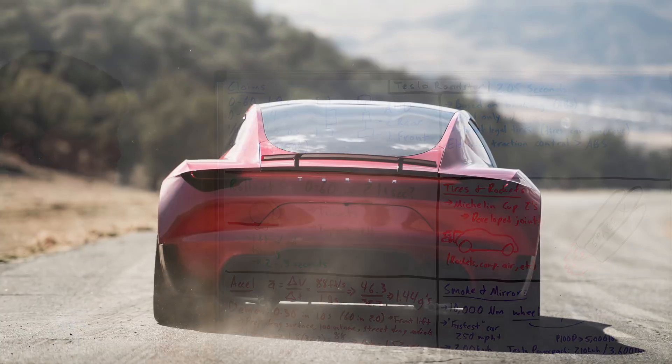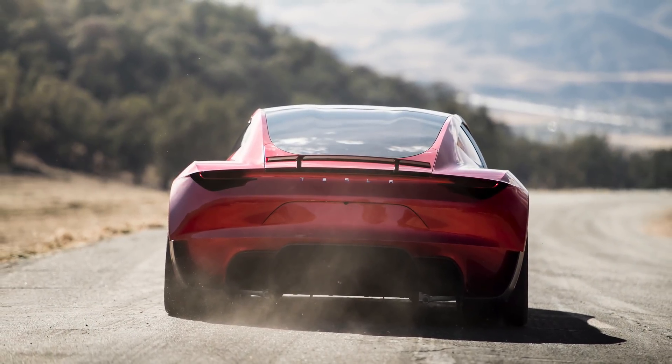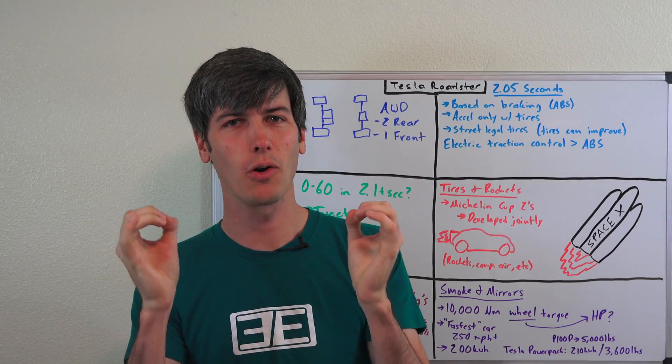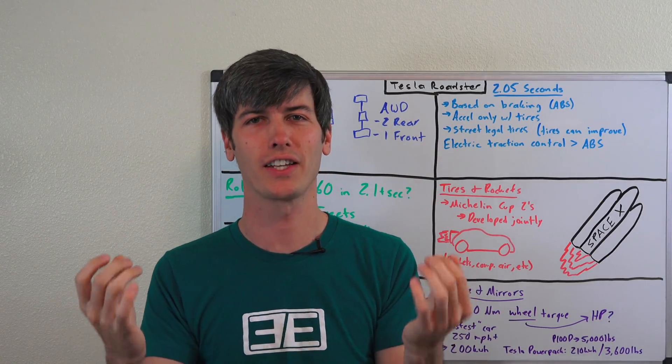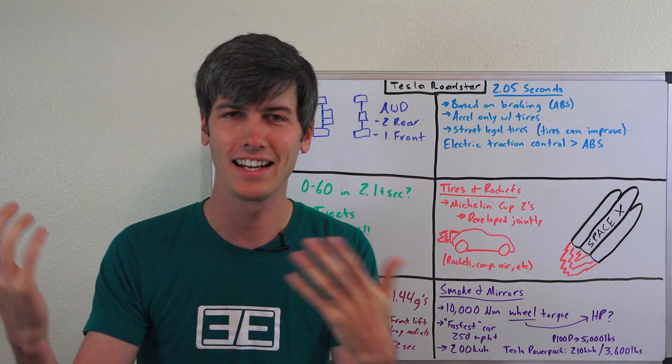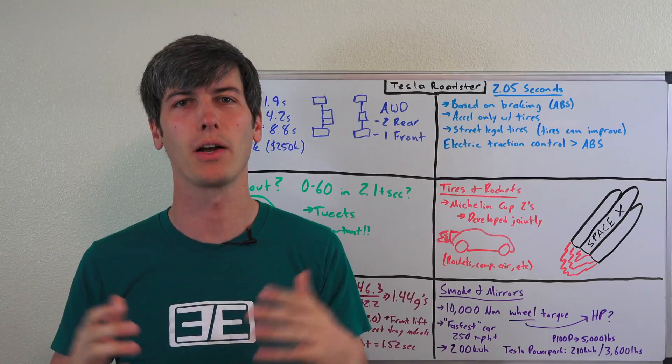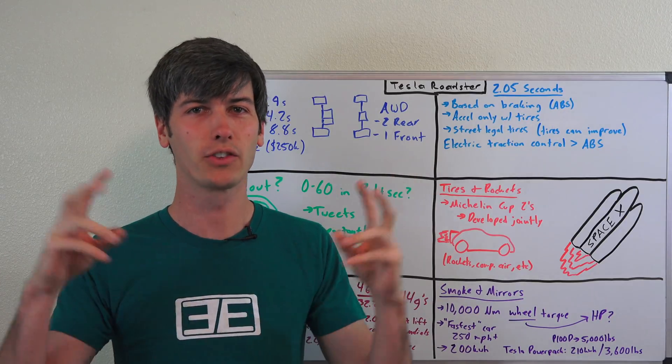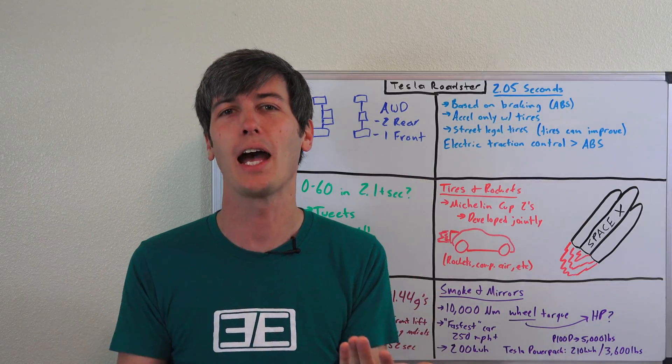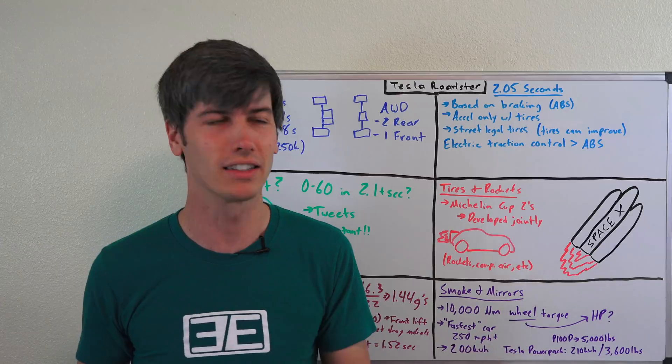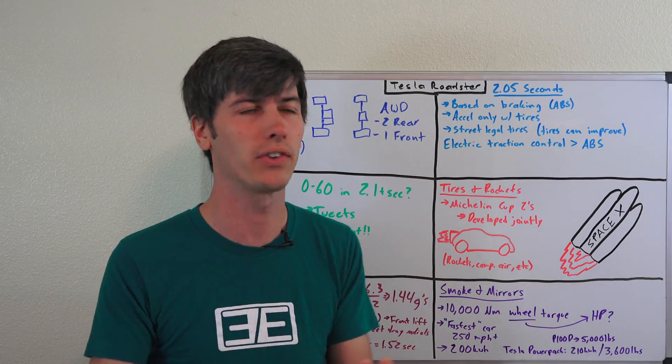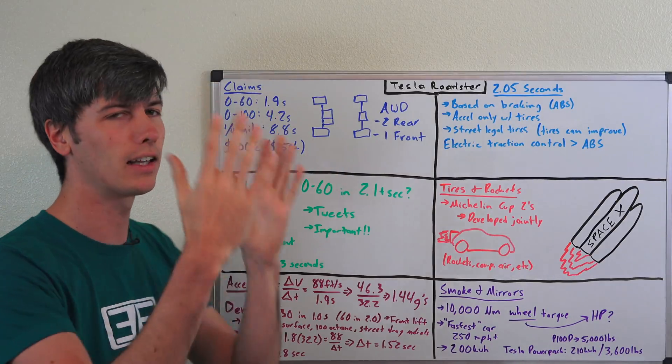100 miles per hour in 4.2 and a quarter mile in 8.8 seconds. Now the first thing we have to talk about is that these are all claims. There is no production Tesla Roadster out there that's actually doing this that's been verified by a third party, just like the Devel 16 is going to hit 300 miles per hour, the Hennessey Venom F5 is going to hit 300 miles per hour. None of these things have actually happened in production car, so until they actually happen truthfully, it's all meaningless. You don't know what's going on behind the scenes with prototypes as far as how they function.